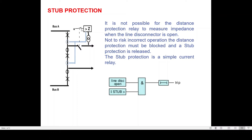But what protection are you using? You are using the distance protection, and that distance protection is already out of service because of the missing CVT input. So this portion becomes unprotected. To protect this section you need a protection system that does not depend upon voltage and which will perform isolation of faults immediately. The only possible method available is overcurrent protection. It is not possible for the distance protection relay to measure impedance when the line disconnector is open. To avoid the risk of incorrect operation, the distance protection must be blocked and extra protection is released.